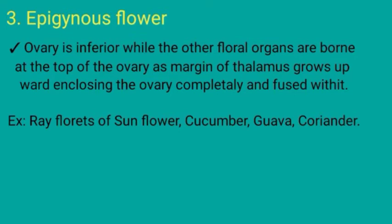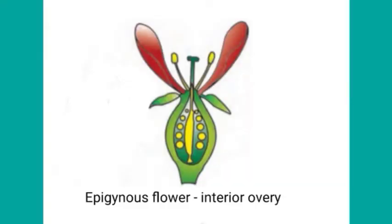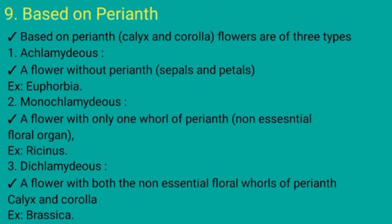Let's see the diagrammatic representation of epigynous flower with inferior ovary. In the diagram, the ovary is completely buried into the thalamus. Other floral appendages like sepals, petals, and stamens are present at the top of the ovary — this is called inferior ovary, while the other floral organs are said to be superior. Another type of classification is based on perianth.